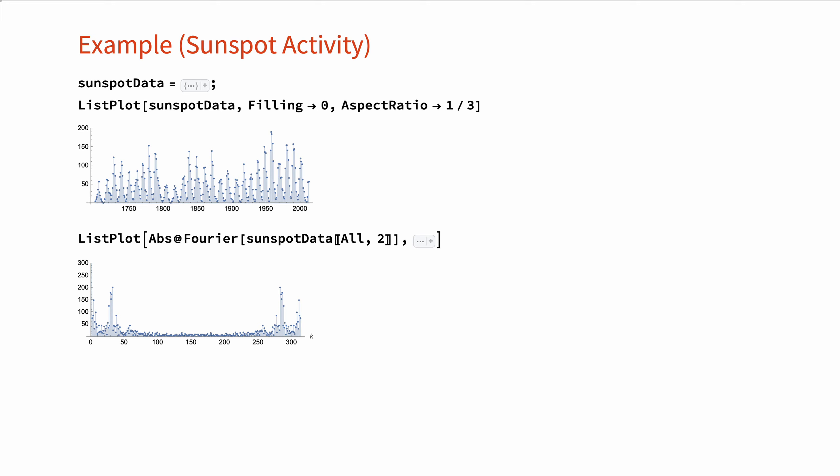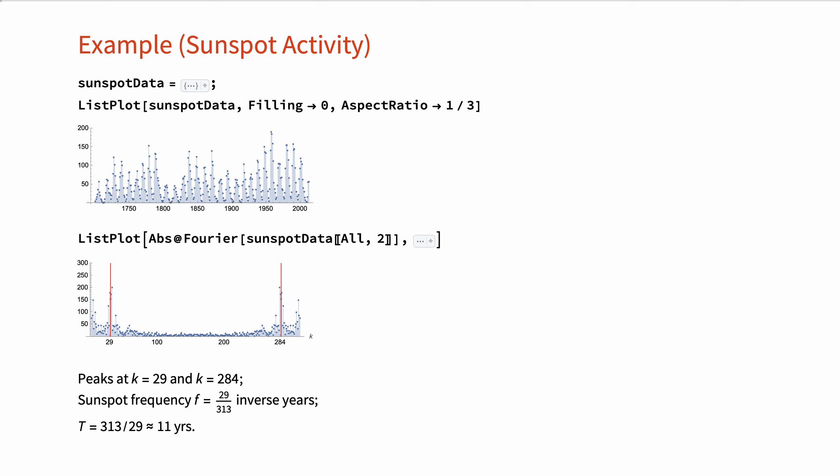As you have probably noticed, the presence of two dominant peaks resembles the Fourier series coefficients of a sine or cosine sequence. The locations of the peaks are approximately at k equal to 29 and k equal to 284, indicating a sunspot frequency of 29/313 inverse years. That means the period is approximately 11 years.